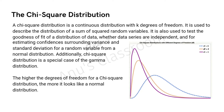The chi-squared distribution is a continuous distribution with k degrees of freedom, where k is any random number. It is used to describe the distribution of a sum of squared random variables. It is used to test the goodness of fit of a distribution of data, whether data series are independent or not, and for estimating confidence intervals surrounding variance and standard deviation for a random variable from a normal distribution.